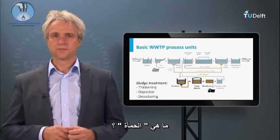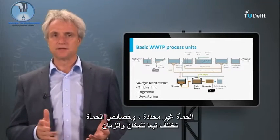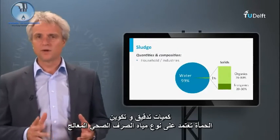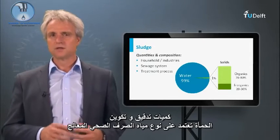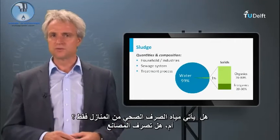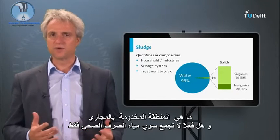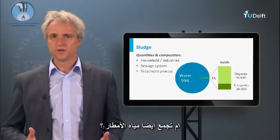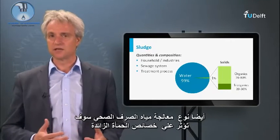What is sludge? Sludge is non-defined, and sludge characteristics differ per location and in time. The exact quantities and composition of the sludge depend on the type of sewage treated. Does the sewage come from purely households, or are industries also discharging to the sewer system? What area is served by the sewer system, and does it collect only sewage or also rainwater? Also, the type of sewage treatment plant will impact the excess sludge characteristics.